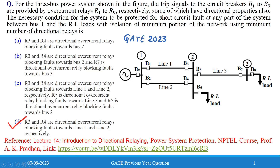Option B states that R3 and R4 are directional overcurrent relays blocking fault towards bus 2, and R7 is a directional overcurrent relay blocking fault towards bus 3. However, R7 is a non-directional overcurrent relay, so Option B is incorrect. Option C states that R3 and R4 are directional overcurrent relays blocking fault towards line 1 and line 2, and R7 is directional — this is also incorrect.